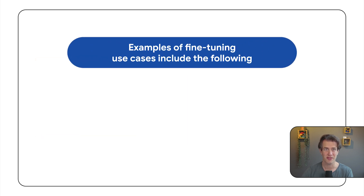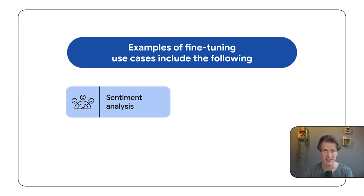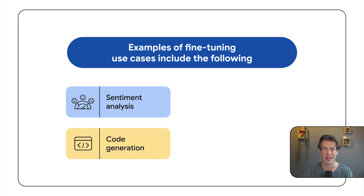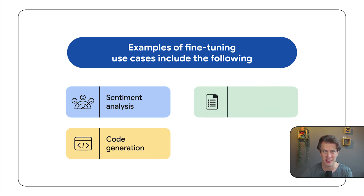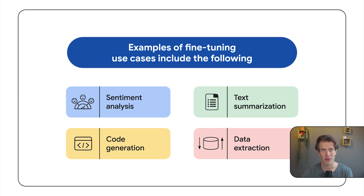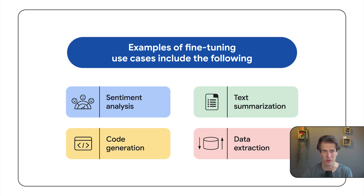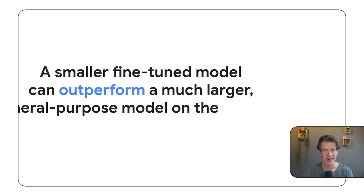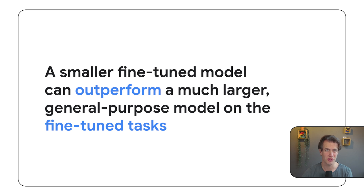So you can use fine-tuning to improve sentiment analysis, code generation, text summarization, data extraction, and many other things. For instance, to create a model that summarizes medical text, you train it on a dataset of medical texts and their summaries. As an added bonus, a smaller fine-tuned model can actually outperform a much larger general-purpose model on those specific tasks.